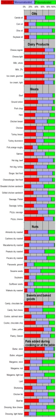A saturated fat is a type of fat in which the fatty acid chains have all or predominantly single bonds. A fat is made of two kinds of smaller molecules: glycerol and fatty acids. Fats are made of long chains of carbon atoms. Some carbon atoms are linked by single bonds and others by double bonds. Double bonds can react with hydrogen to form single bonds. They are called saturated because the second bond is broken up and each half of the bond is attached to a hydrogen atom.